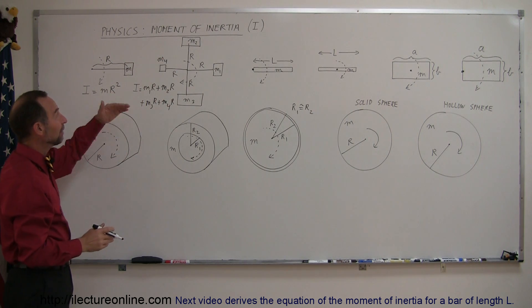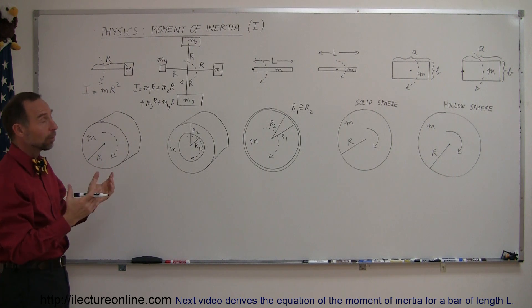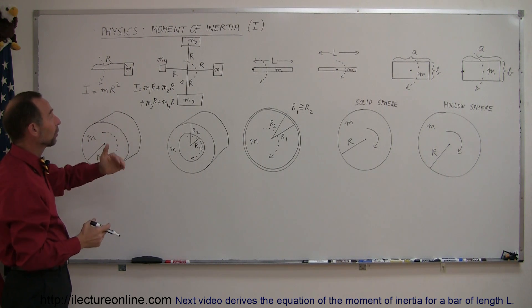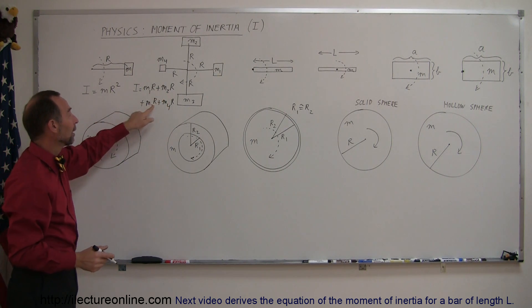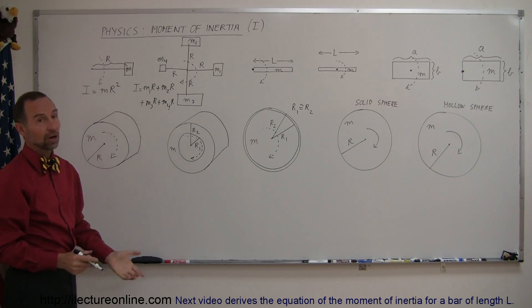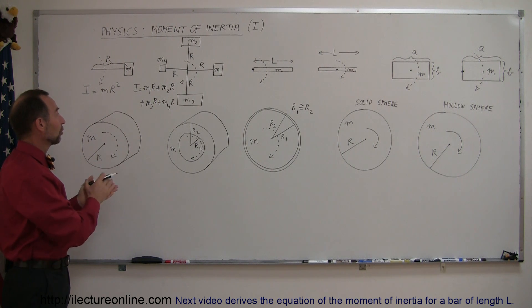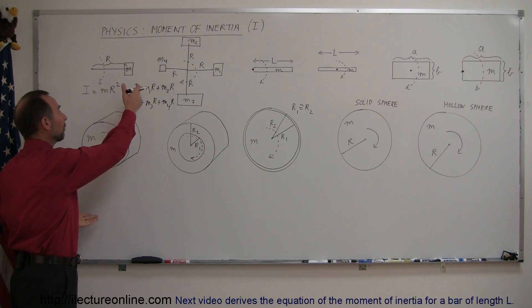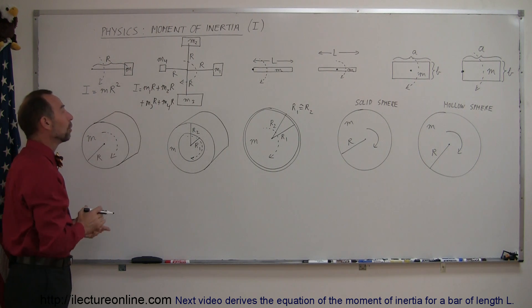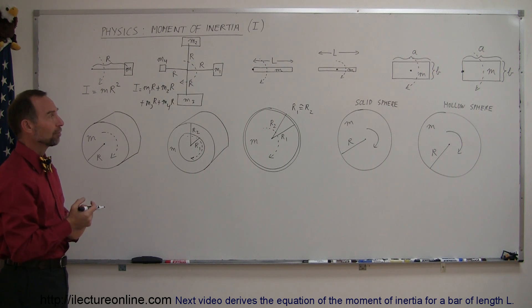What would happen if the r's weren't all the same? No problem. If one r is bigger than another, we just notate that by using different r values. The total moment of inertia is simply the sum of the individual moments of inertia — pretty straightforward.